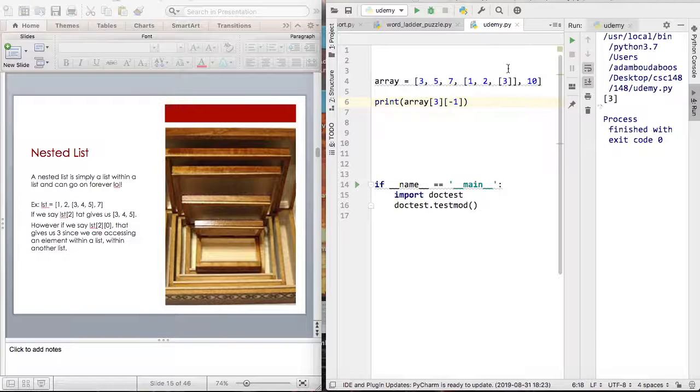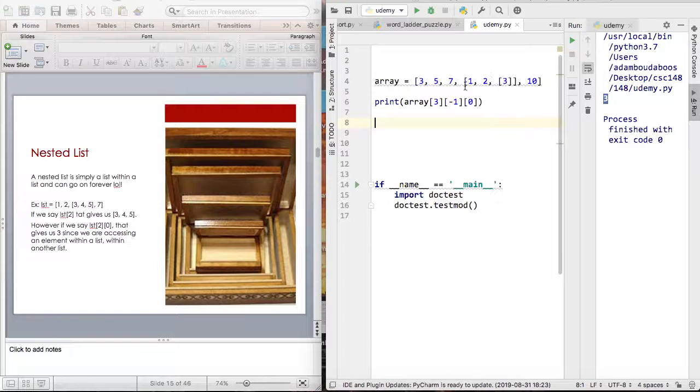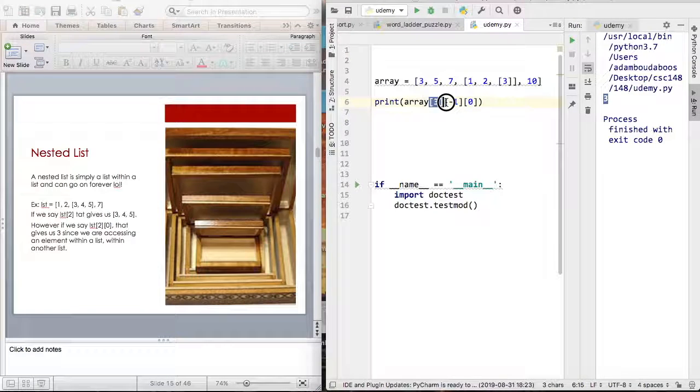As you can see here it doesn't return back 3 because this is a list here, it's not an int. But if I were to say at index 0, it's 3 here. Because here's a trick. You have three lists so you can basically have three indexes to get a very specific element.